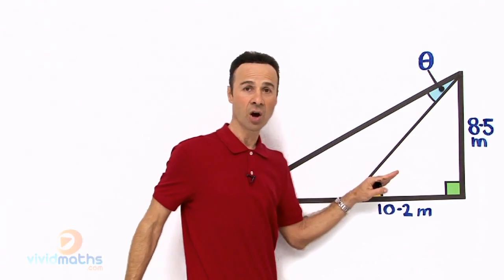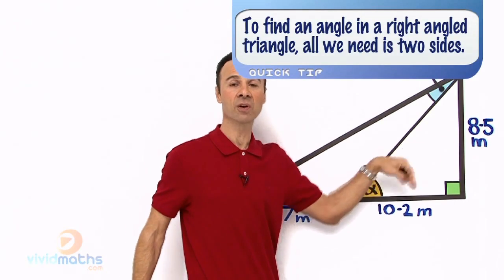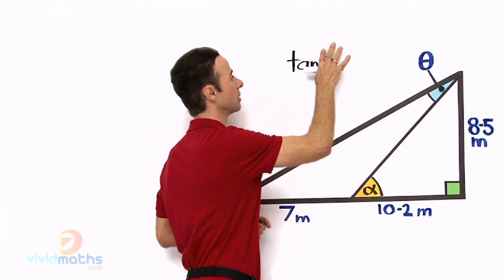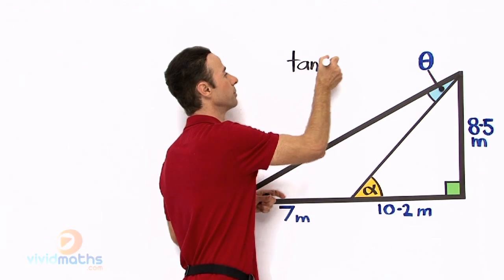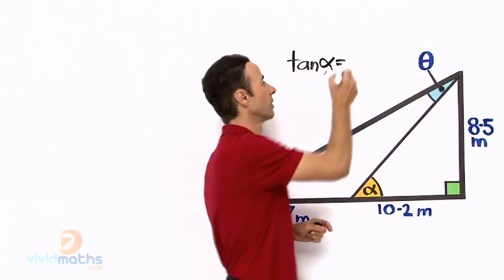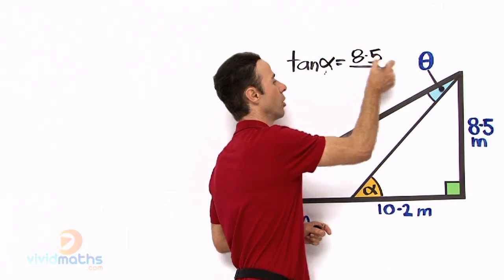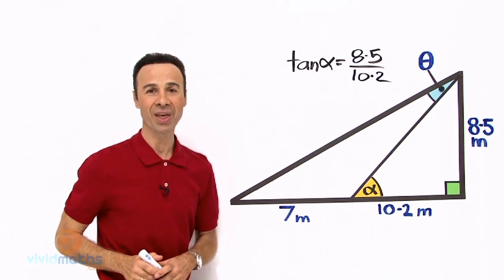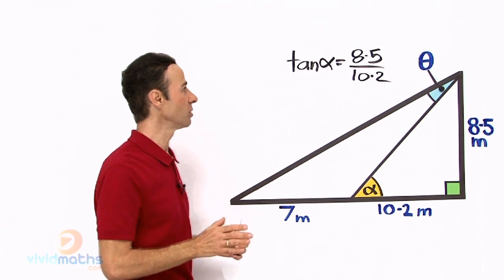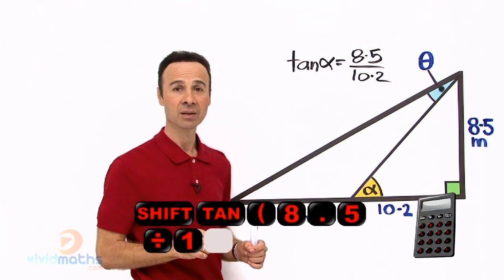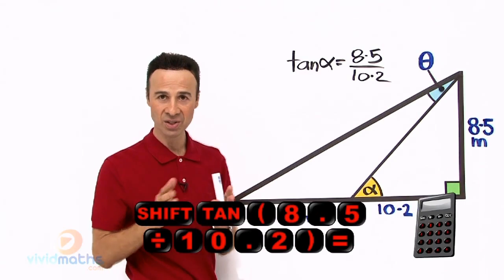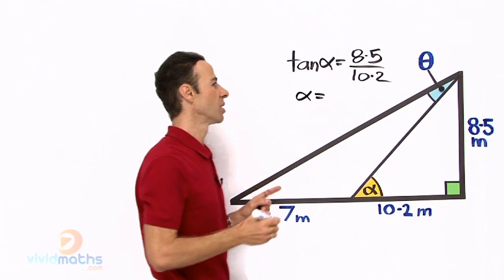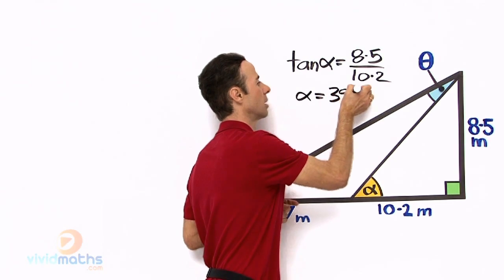So let us find angle alpha. It is going to be opposite over adjacent right next to that side there. Opposite over adjacent is tan, so let us do that. Tan alpha equals 8.5 over 10.2. Let us put that in the calculator: 8.5 divided by 10.2 gives us a decimal, then you go Shift then degrees-minutes-seconds to get it in degrees and minutes. So in this example we get alpha equals 39 degrees and 48 minutes.